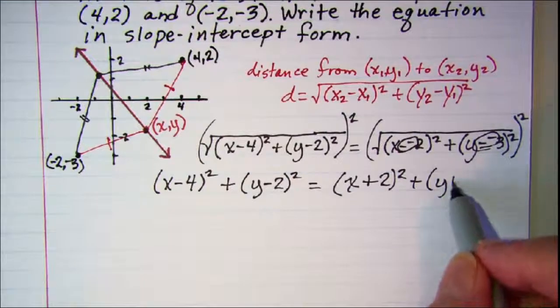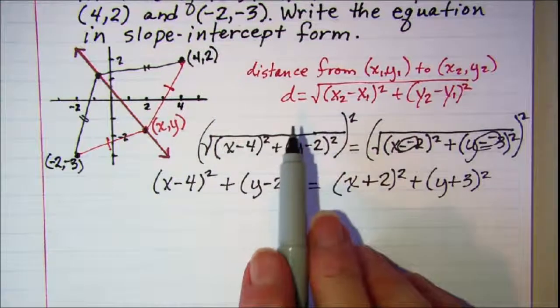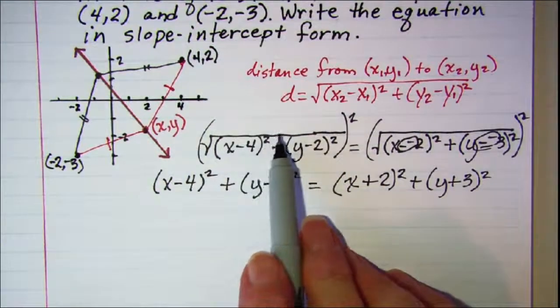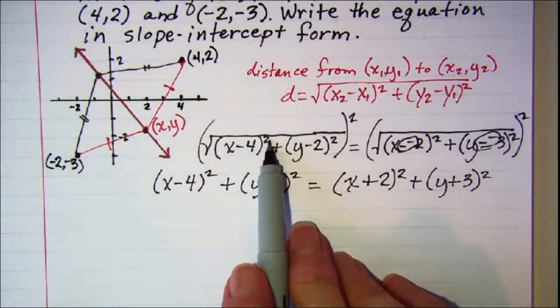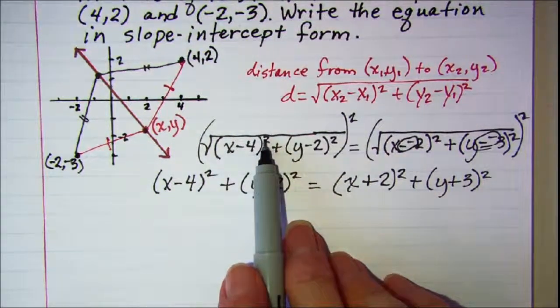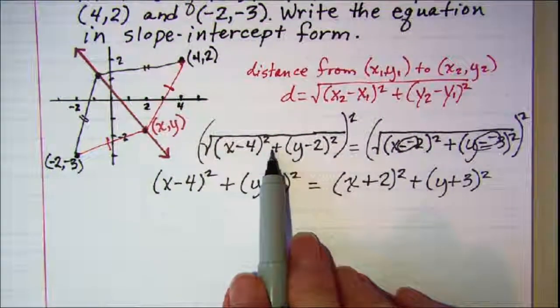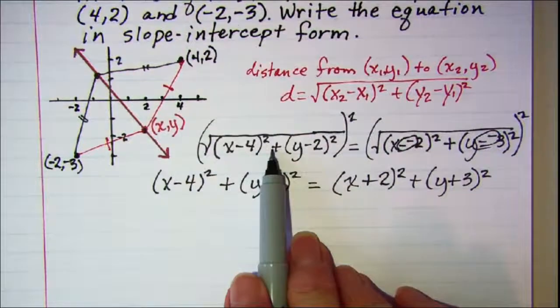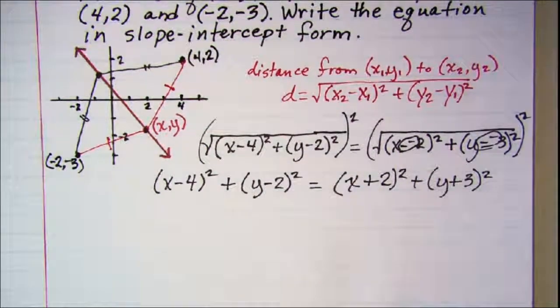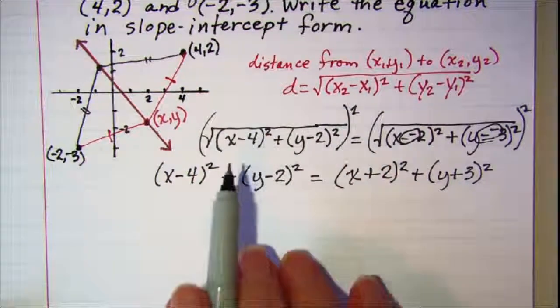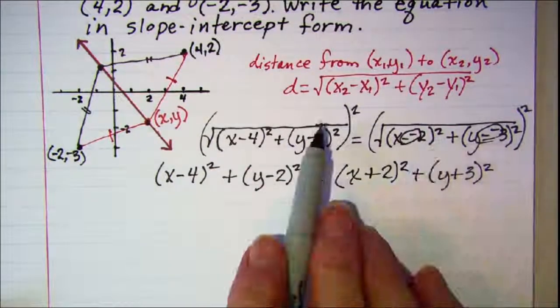Now do not make the mistake of thinking that this radical removes these squares. It does not, and it never will, so please don't do that. Because these squares are added together, we don't have a rule that allows us to do that. It's only when they're multiplied that we can apply the square root to a square like that. So we have to actually square both sides to get rid of those radicals.